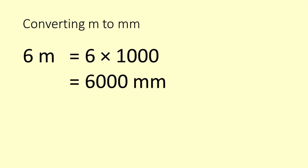To convert from metres to millimetres, we multiply by 1000. So 6 metres is 6000 millimetres.